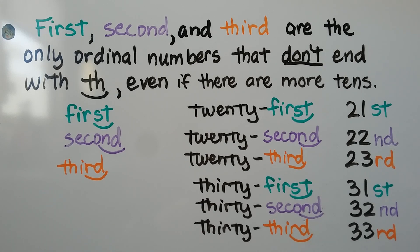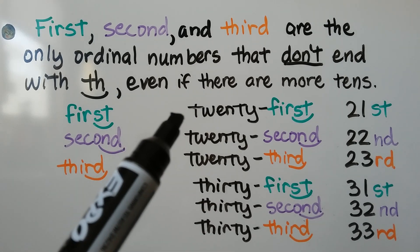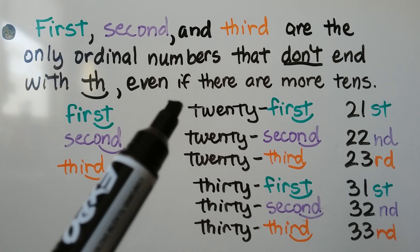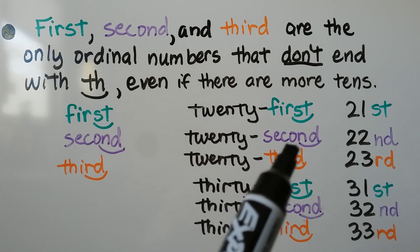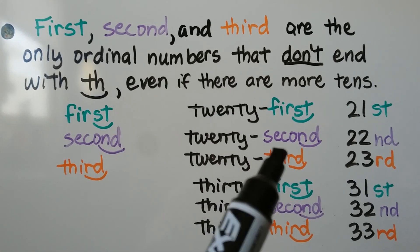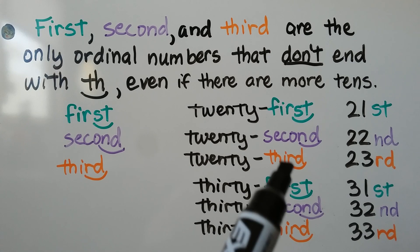And even if we add more tens, if we add two tens to first, it would be 21st. And that ends with an ST. Twenty-second ends with an ND. Twenty-third ends with an RD.